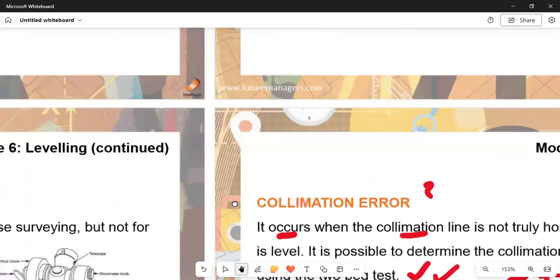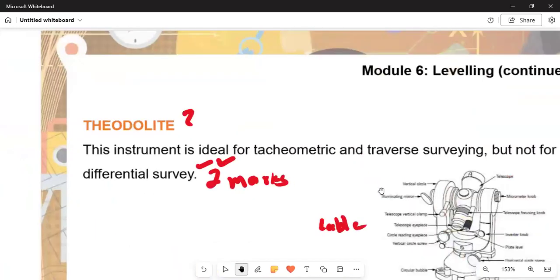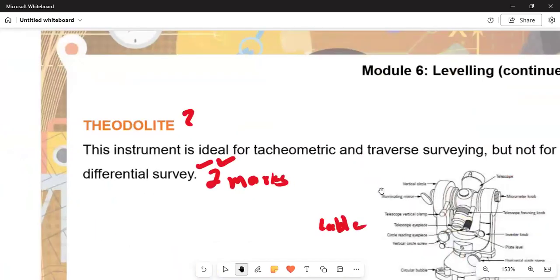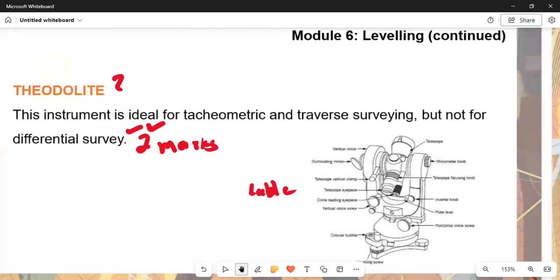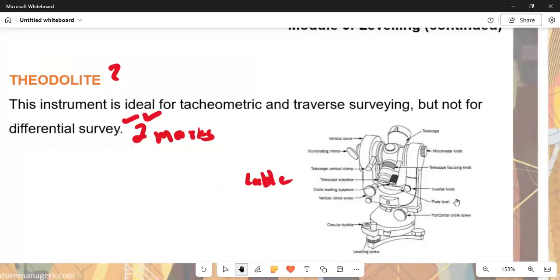Moving on again, we have to see that we've got the theodolite. What is that? We are saying that this is the instrument that is ideal for the tacheometric and the traverse surveying, but not for the differential survey. That is for two marks.